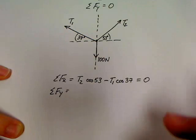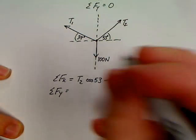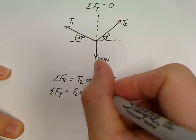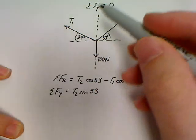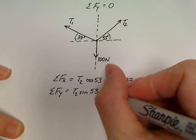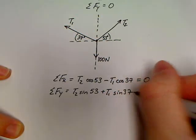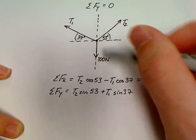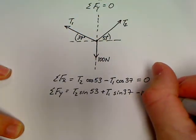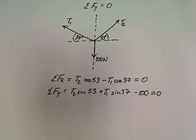Sum of the forces Y. The T2 has a Y component, and I'll use sine to get it. So we've got T2 sine 53. The T1 also has a positive Y component. So we will add T1 sine 37. This 100 is directed in a negative direction. So I'll write minus 100. And set that all equal to zero in this case.